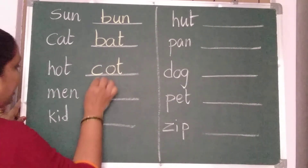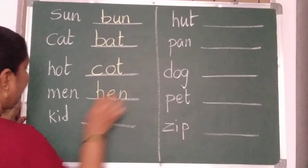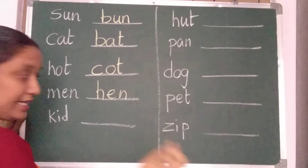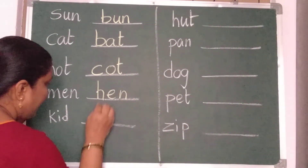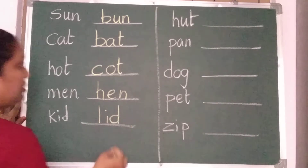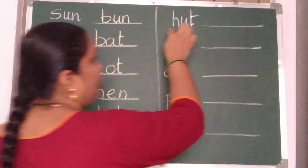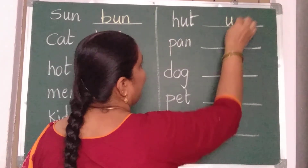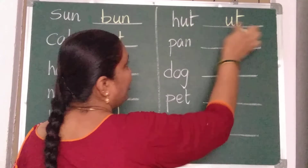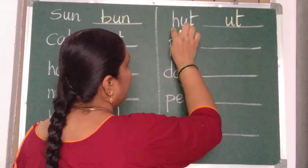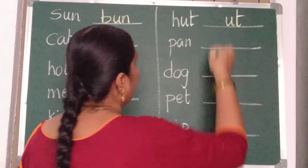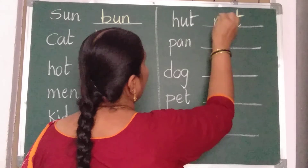Men, hen — H, E, N — hen. Kid, lid, did — L, I, D — lid. H, U, T — hut. Write U, T first. Instead of H, what can I write? N, U, T — nut.